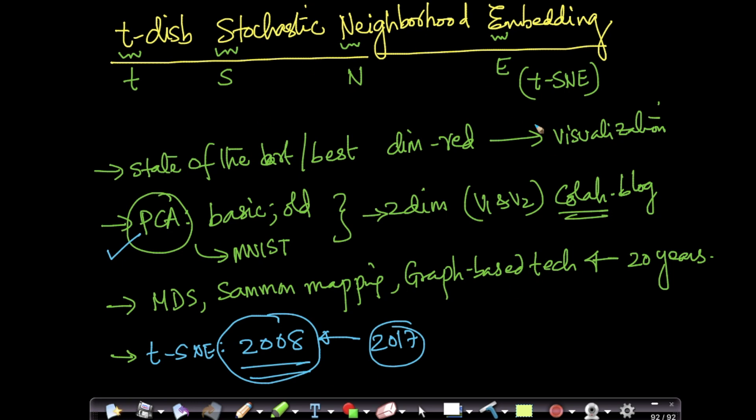As far as T-SNE is concerned, this is state-of-the-art. We are not covering MDS, Sammon mapping, graph-based techniques, etc., because we believe that T-SNE can do better than most of these techniques. In most cases, I'm not saying these techniques don't have applications, but T-SNE will do a pretty good job or very comparable job to other techniques. Hence, we are covering PCA and T-SNE in our dimensional reduction sections.